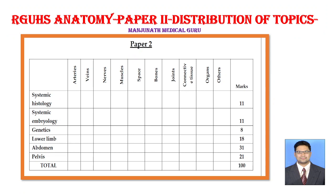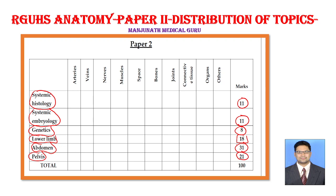Paper 2 mark distribution: systemic histology — for example, histology of urethra, histology of prostate — around 11 marks. Systemic embryology — development of kidney, liver, uterus — 11 marks. Genetics around 8 marks, lower limb 18 marks, abdomen around 31 marks, and pelvis 21 marks.